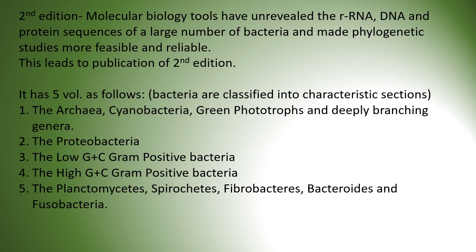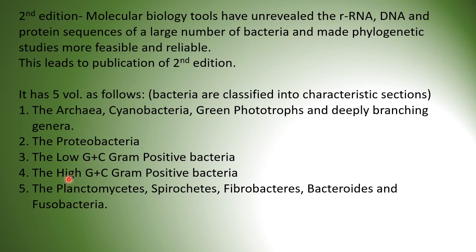In the second edition, molecular biology tools unraveled the RNA, DNA, and protein sequences of a large number of bacteria, making phylogenetic studies more feasible and reliable. This led to the publication of the second edition. It has five volumes where bacteria are classified into characteristic sections: first, archaea, cyanobacteria, green phototrophs, and deeply branching genera; second, proteobacteria; third, low GC gram positive bacteria; fourth, high GC gram positive bacteria; and fifth, planctomycetes, spirochetes, fibrobactors, bacteroides, and fusobacteria.